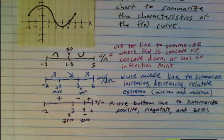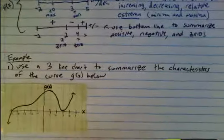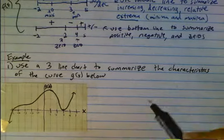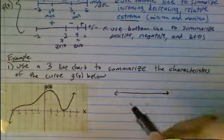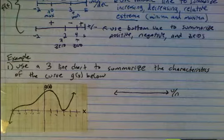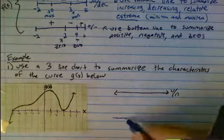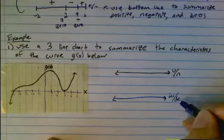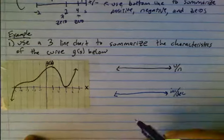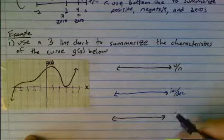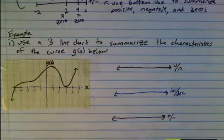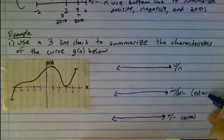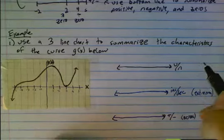Now let's have you try an example. Use a three-line chart to summarize the characteristics for the curve g of x. The first level of the three-line chart is going to be concave up, concave down, and inflection points. The second level is going to be increasing, decreasing, and extrema. The third line is going to be plus/minus, zeros, extrema, and inflection points.